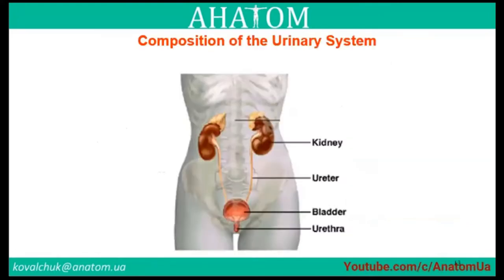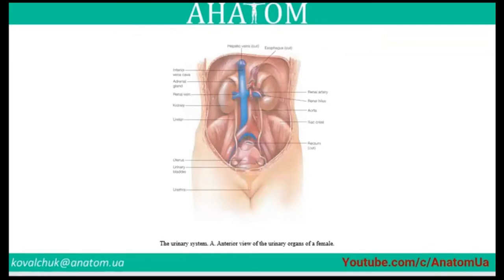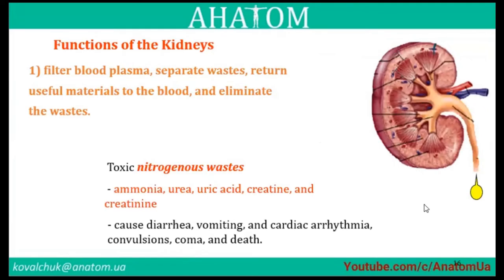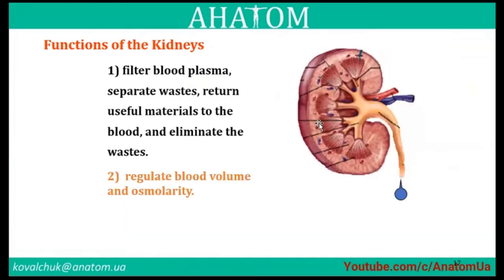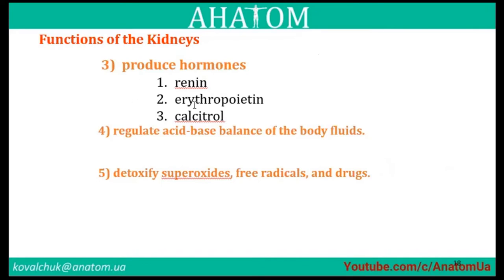The urinary system is located near the abdominal cavity and pelvic cavity. The function of the kidney is to filter blood plasma, separate waste from useful materials returning to blood, and eliminate toxic nitrogenous wastes: ammonia, urea, uric acid, creatinine, and creatine. Additional functions include regulating blood volume and osmolarity, producing hormones — renin, erythropoietin, calcitriol — and regulating acid-base balance and eliminating free radicals and drugs.